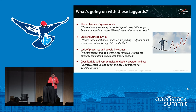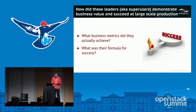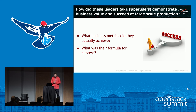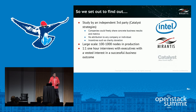So the question we asked was: how did these cloud-savvy leaders — superusers — demonstrate business value, and how did they succeed at very large-scale production? What business metrics did they achieve? What was the formula for success? Were they doing something differently from the laggards? This was the biggest question, not just about OpenStack specifically, but a broader question. So we set out to find out.